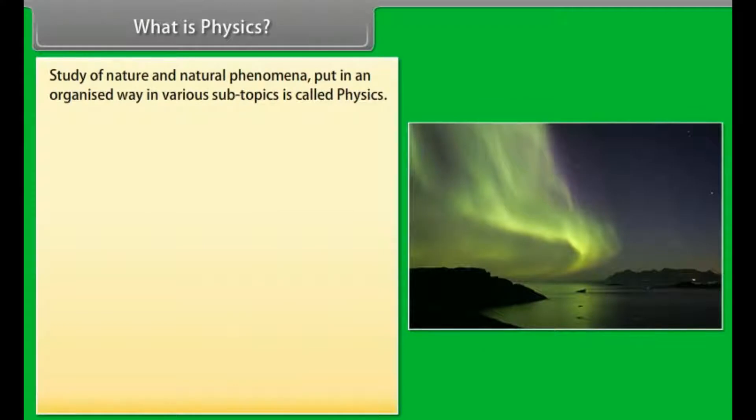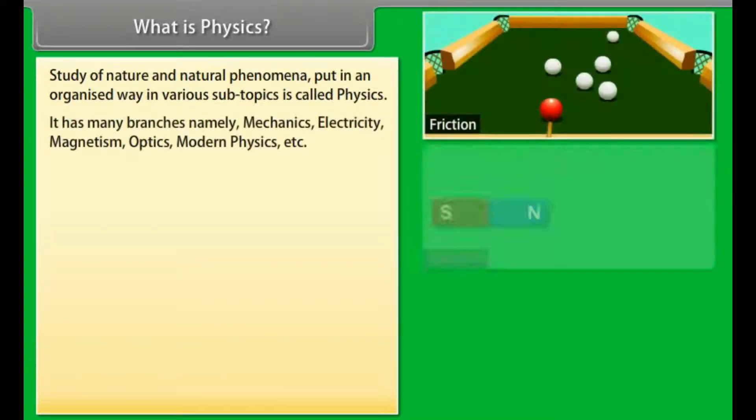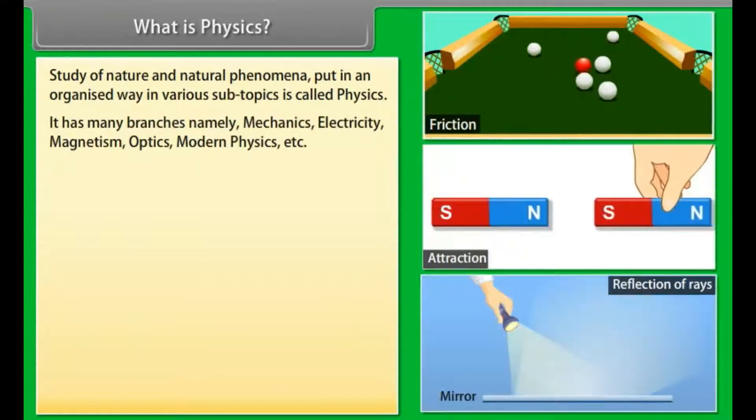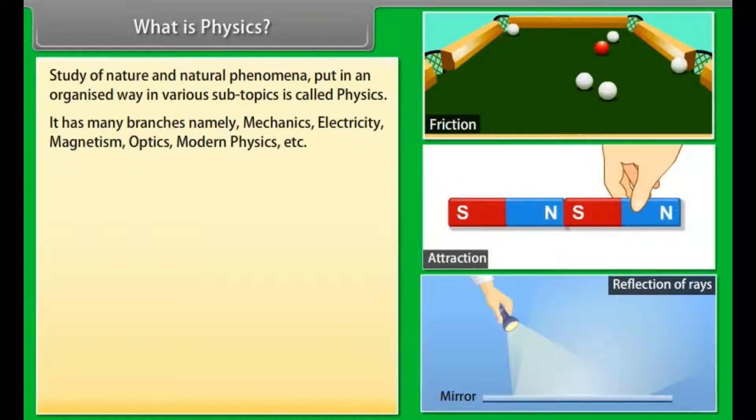What is physics? Study of nature and natural phenomena put in an organized way in various subtopics is called physics. It has many branches, namely mechanics, electricity, magnetism, optics, modern physics, etc.